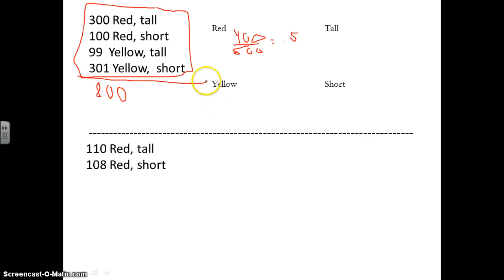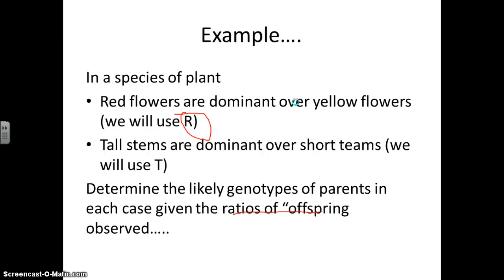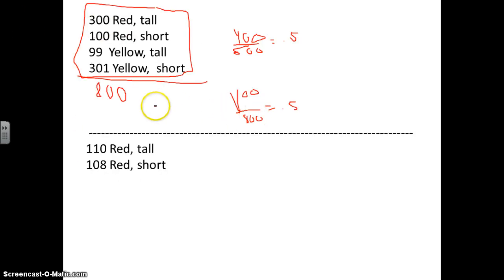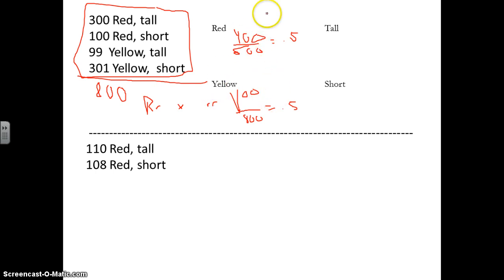For yellow, there were also 400 of them — 400 out of 800, that's also a 0.5 ratio. So you have to think to yourself: what mating produces a 50-50 ratio? To get the 50-50 ratio, one has to be big A, little a, and the other one has to be little a, little a. So that lets us know that for the flower color trait, one of the parents has to be big R, little r, and the other one has to be little r, little r — because that will produce our 50-50 ratio for color.